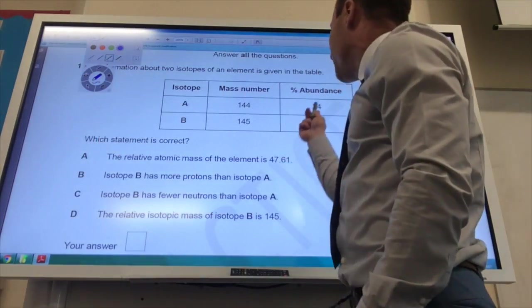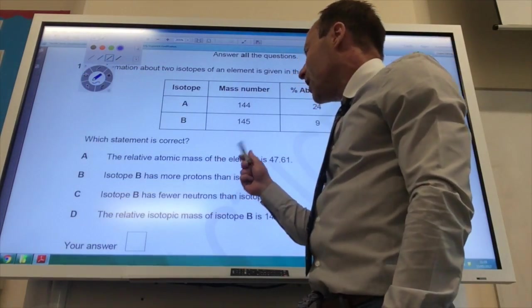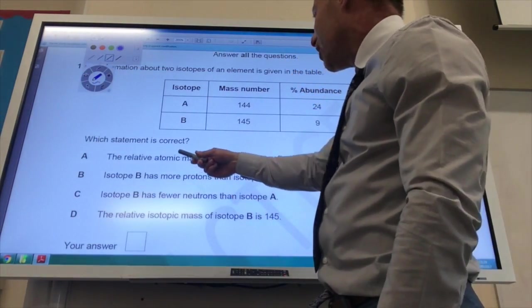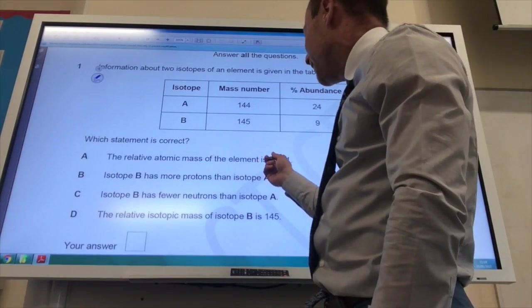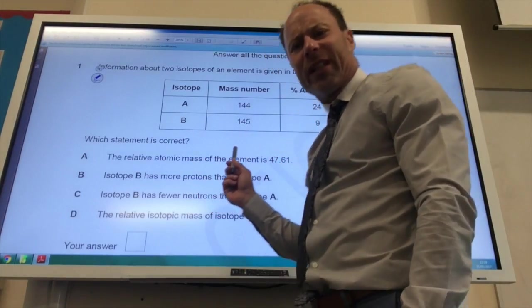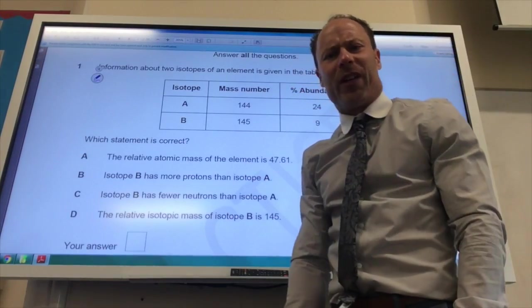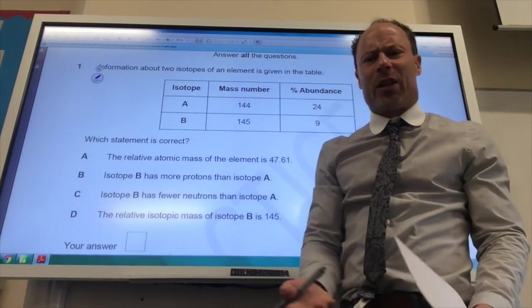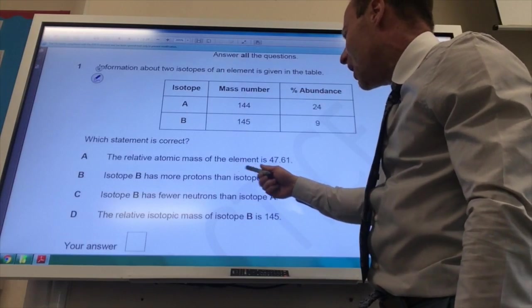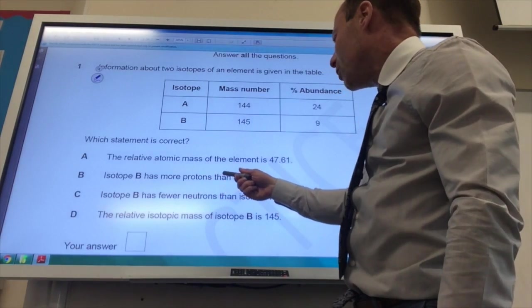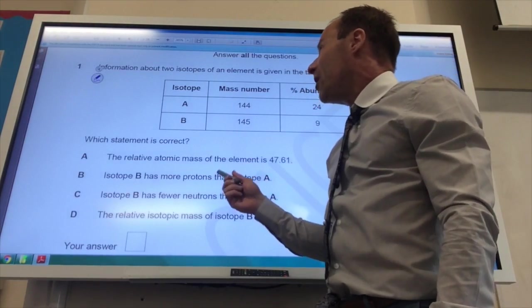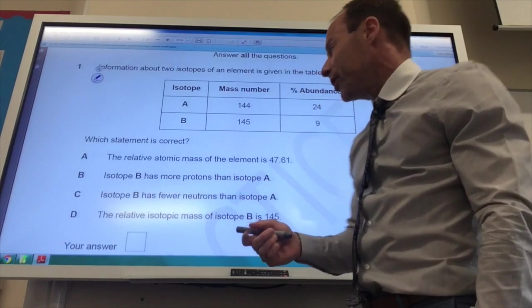Two isotopes here give you the mass number and also percentage of abundance. Which is correct? The relative atomic mass of the element is 47. Well it can't be 47 because the mass numbers are 144 and 145. All the isotopes are going to be around that number, so there's no way it can be that. Isotope B has more protons than isotope A. That can't be right because isotopes have the same number of protons.